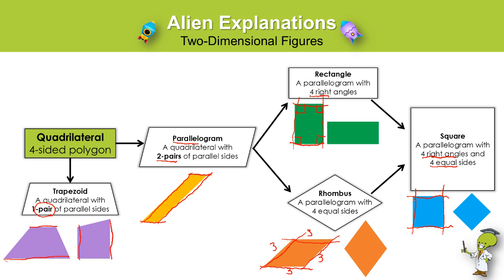The square has four right angles — one, two, three, four — and all of its side lengths are the same. So a square is always a rectangle by definition, and a square is always a rhombus, and a square is always a parallelogram, and a square is always a quadrilateral.